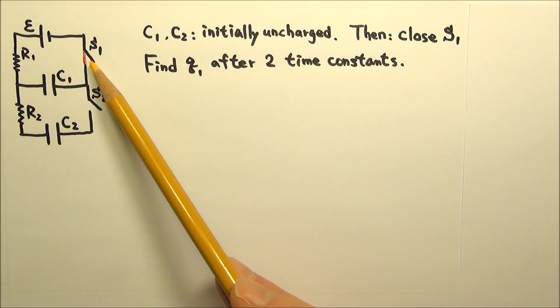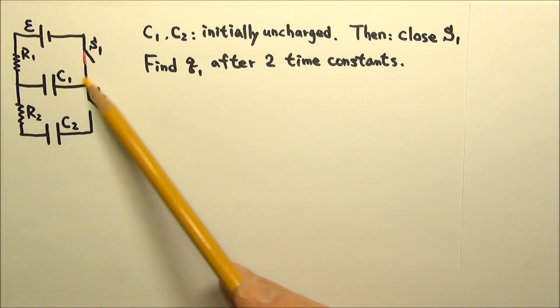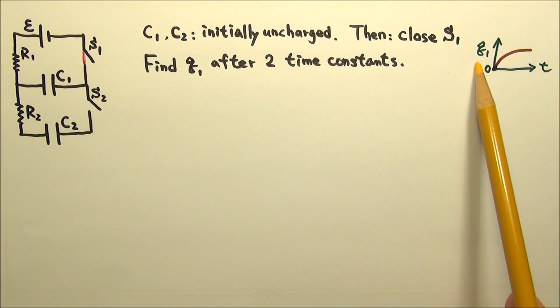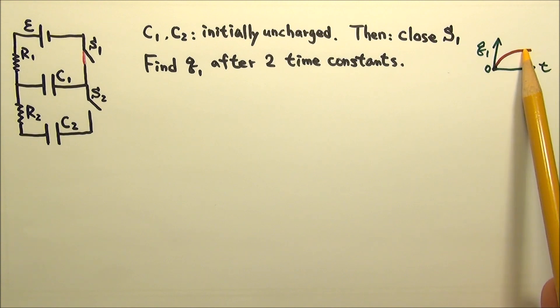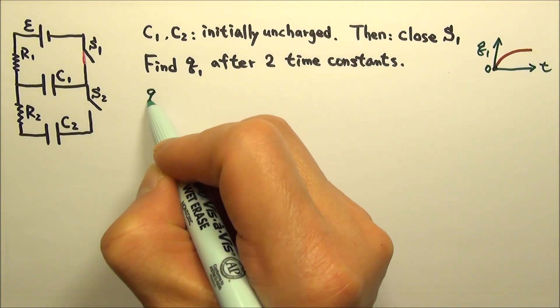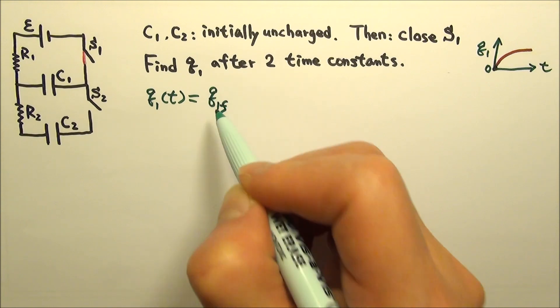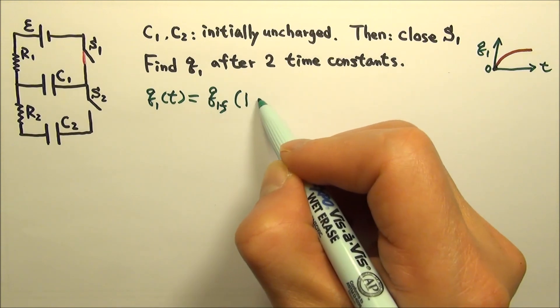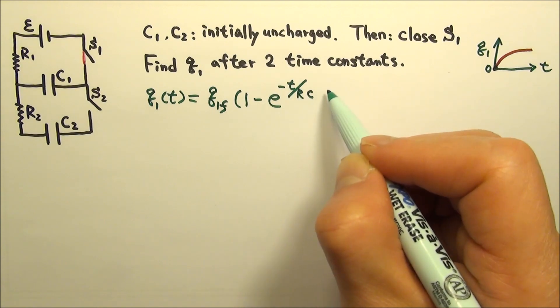After S1 is closed, the battery begins charging the capacitor C1 through this loop. The charge on C1 is a 1 minus exponential decay graph. Because it is initially uncharged, then the charge increases, and then it becomes fully charged. So Q1 as a function of time is the final value of Q1 times 1 minus e to the negative t over RC.